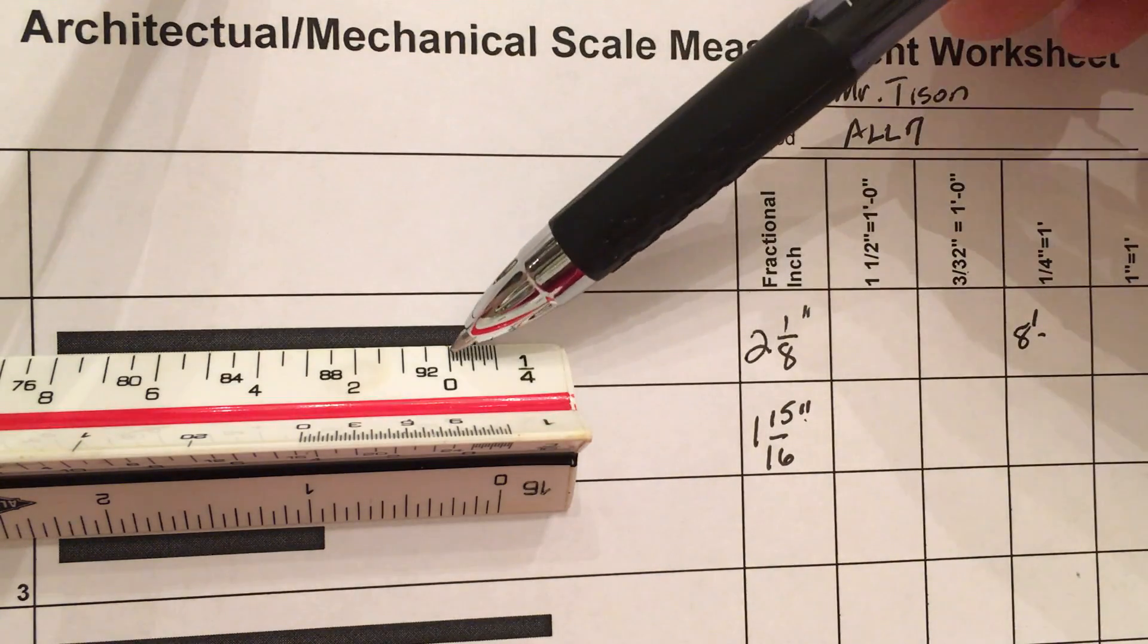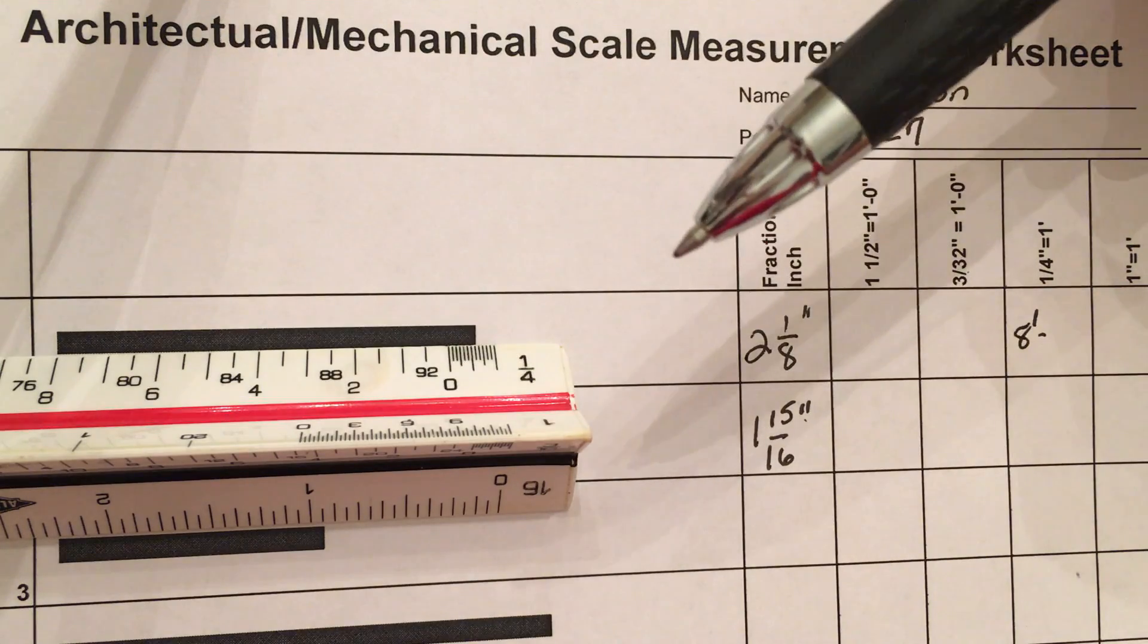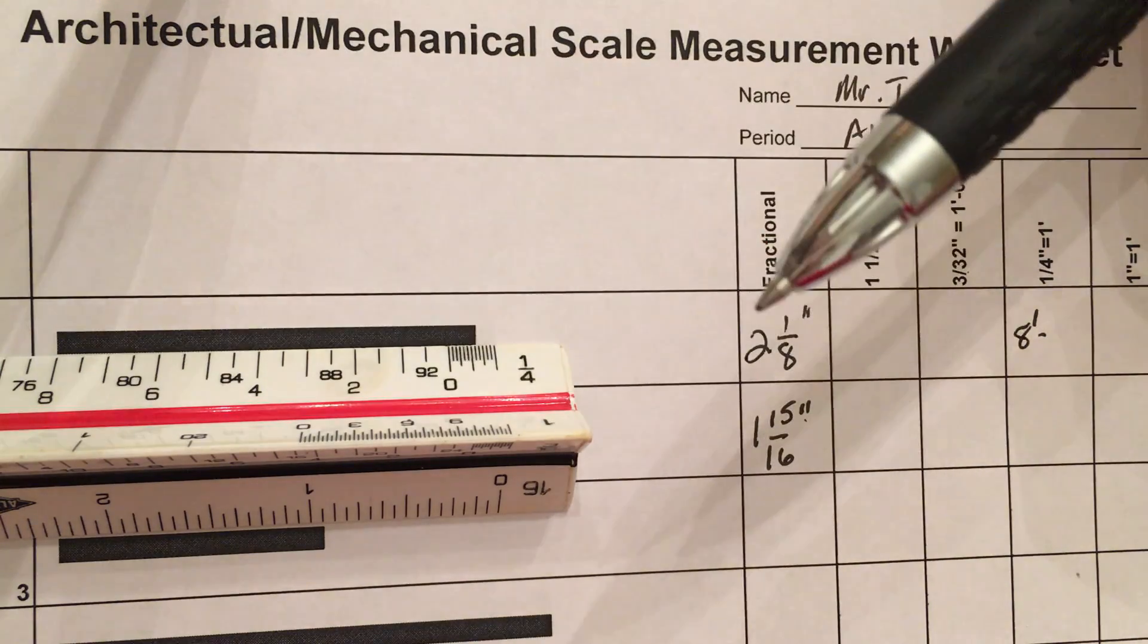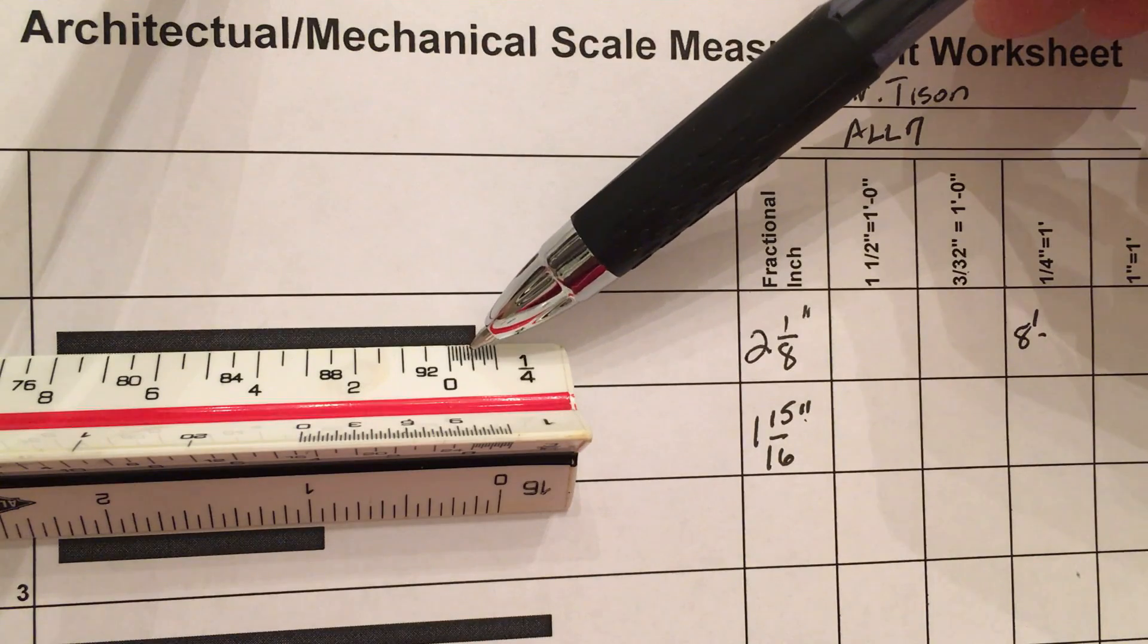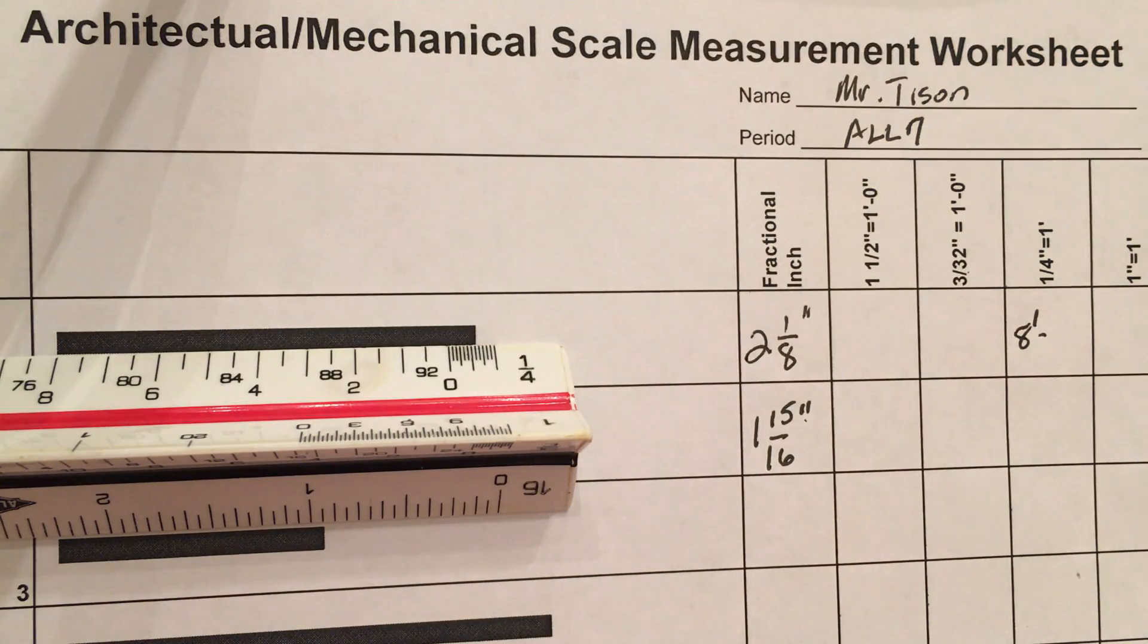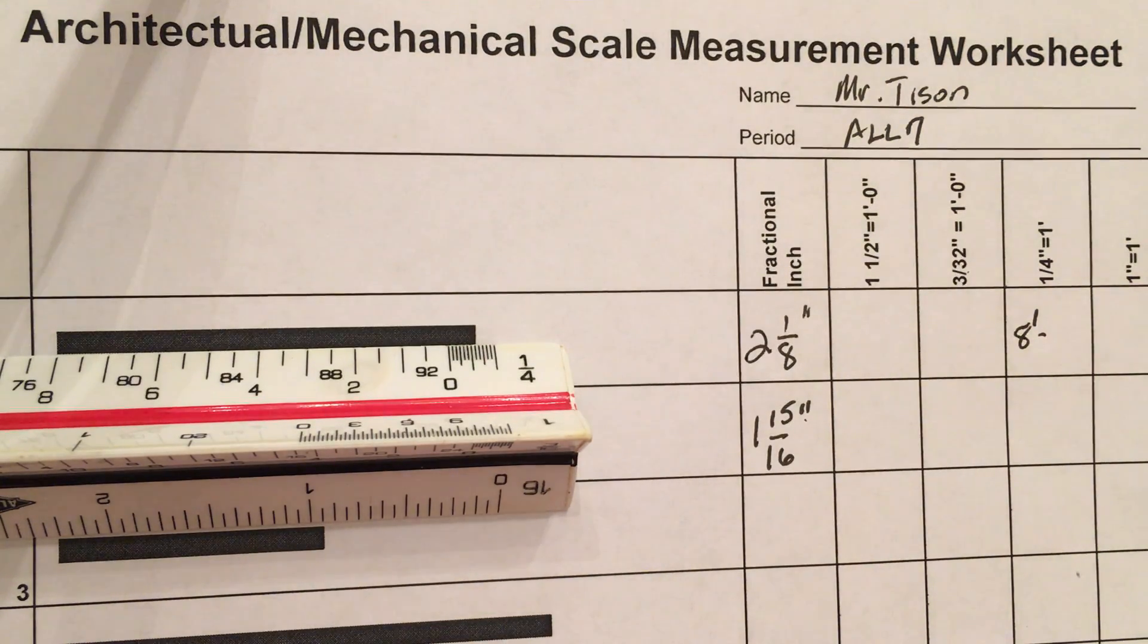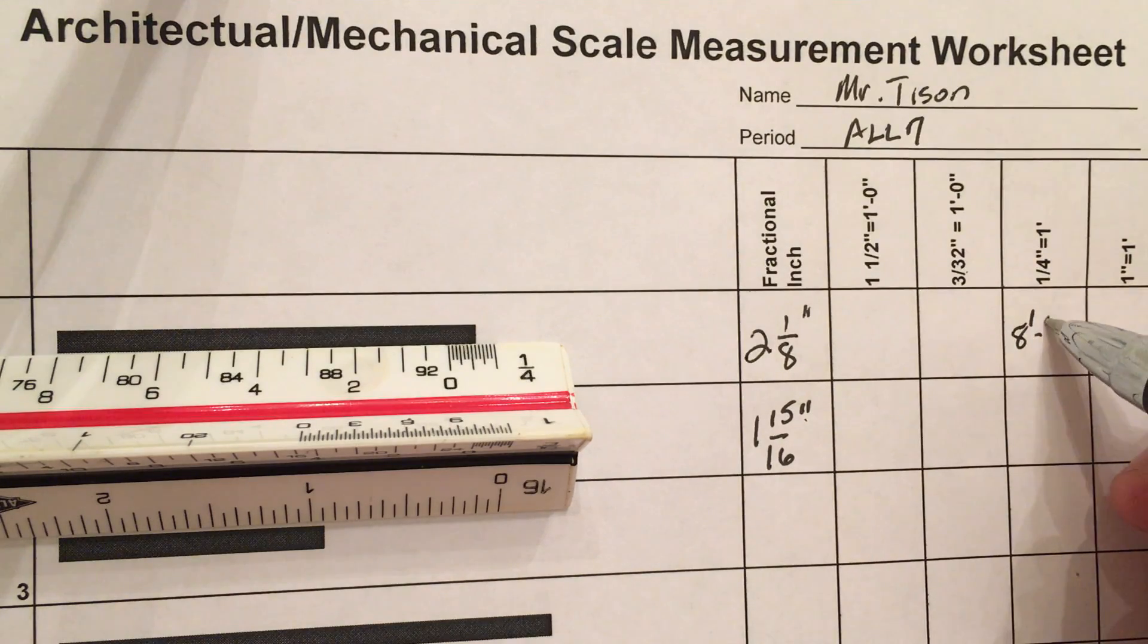And then I've got to remember that this represents a foot and there are 12 inches in a foot and there happen to be 12 marks, so each mark is going to be an inch. So I know that that's 3, 4, 5, 6, 7. I'm going to say that's 8 feet 7 inches.